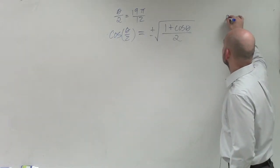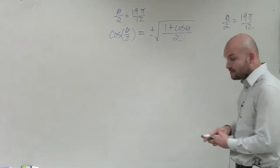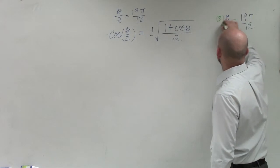So what I'll do is theta over 2 equals 19π over 12. Now, to solve for theta, I'll multiply by 2 on both sides.